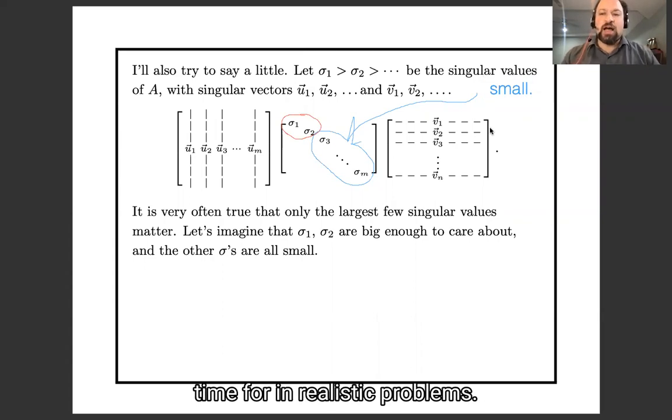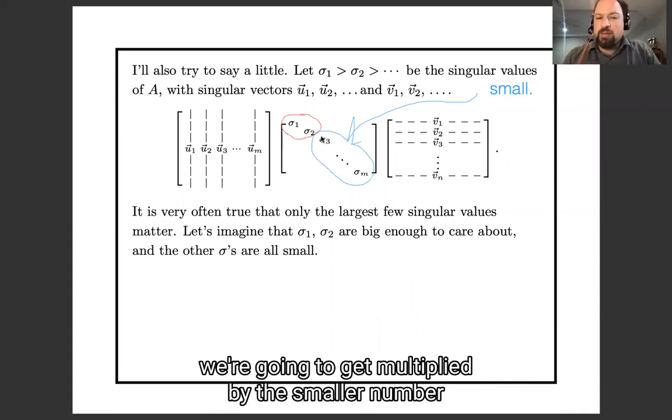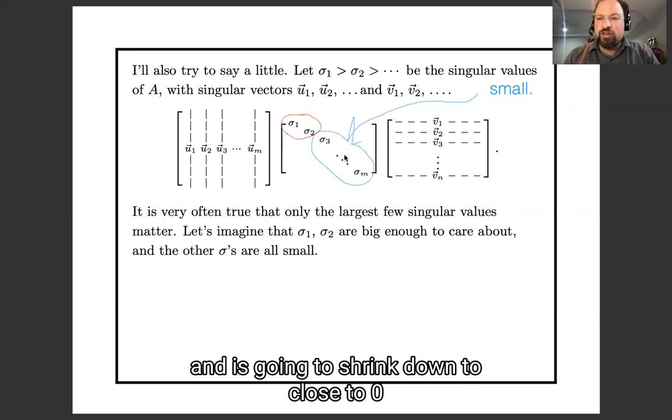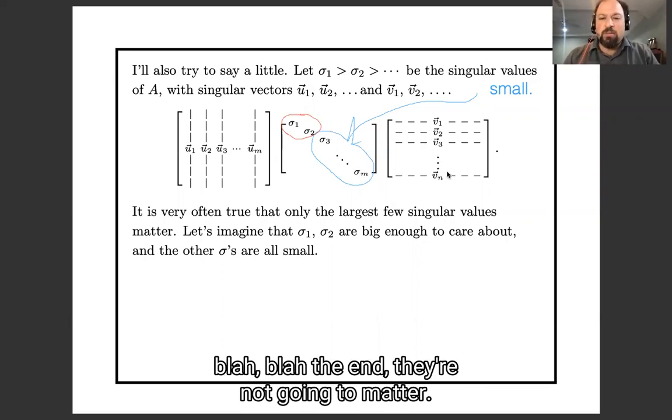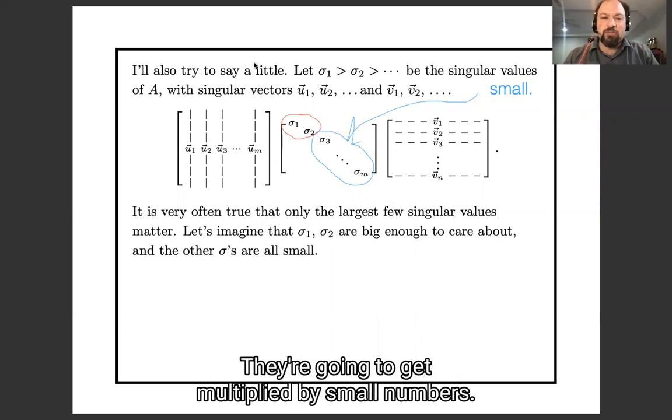And this actually happens all the time for realistic problems. So in that case, u3, u4, and all these u's over here, they're not going to matter, because they're going to get multiplied by these small numbers and shrink down to practically zero. And similarly v3, v4, and so on, they're not going to matter, they're going to get multiplied by small numbers.